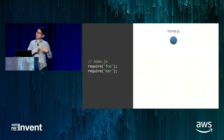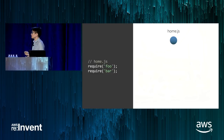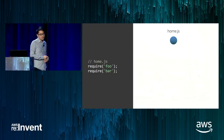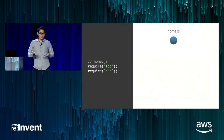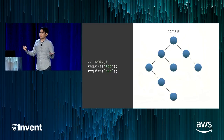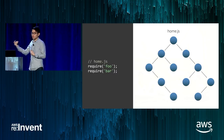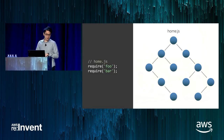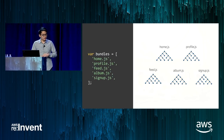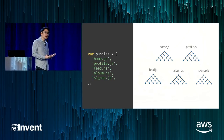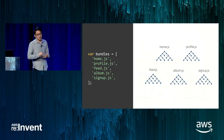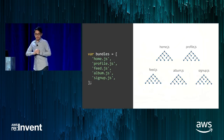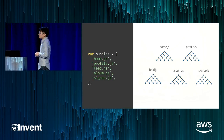If you've got a JavaScript application with an entry point called HomeJS, you might have dependencies like Foo and Bar, and each of these dependencies will have their own dependencies — you end up with a dependency graph for your application. As your website grows, you're going to have different pages like a home page and a profile page, each with their own dependency graph.